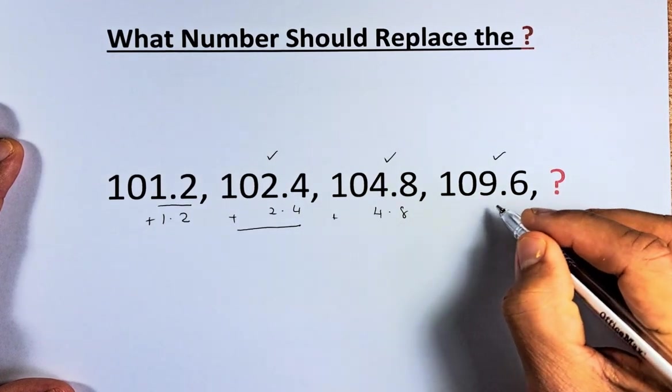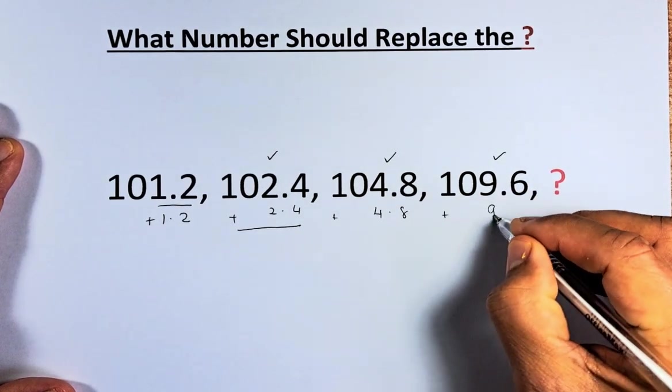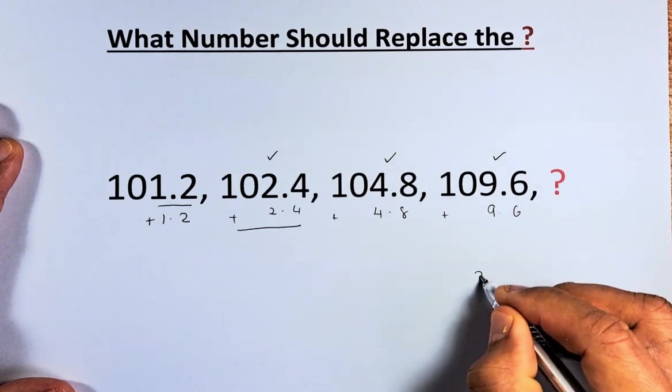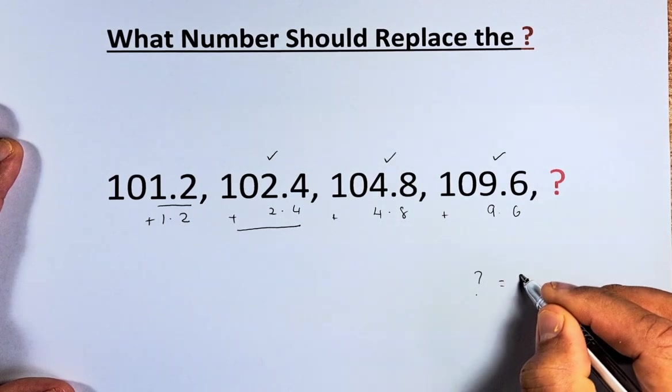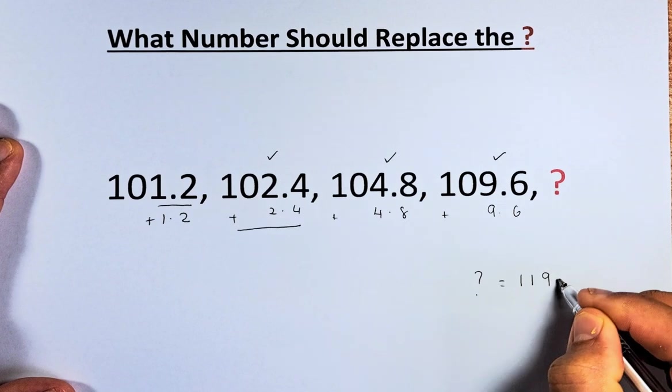So when you add, to get the question mark, you need to add 9.6. And the answer for the question mark is going to be 119.2.